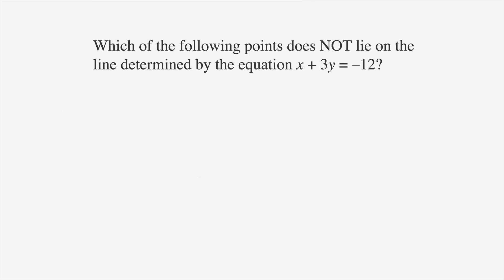Which of the following points does not lie on the line determined by the equation x plus 3y equals negative 12? The answer choices show coordinates. Let's first circle does not lie so we don't mistakenly look for points that do lie on the line. Since every point on a line must work in the equation, x plus 3y equals negative 12, let's look at each of the answer choices to see which one will not work in the equation.